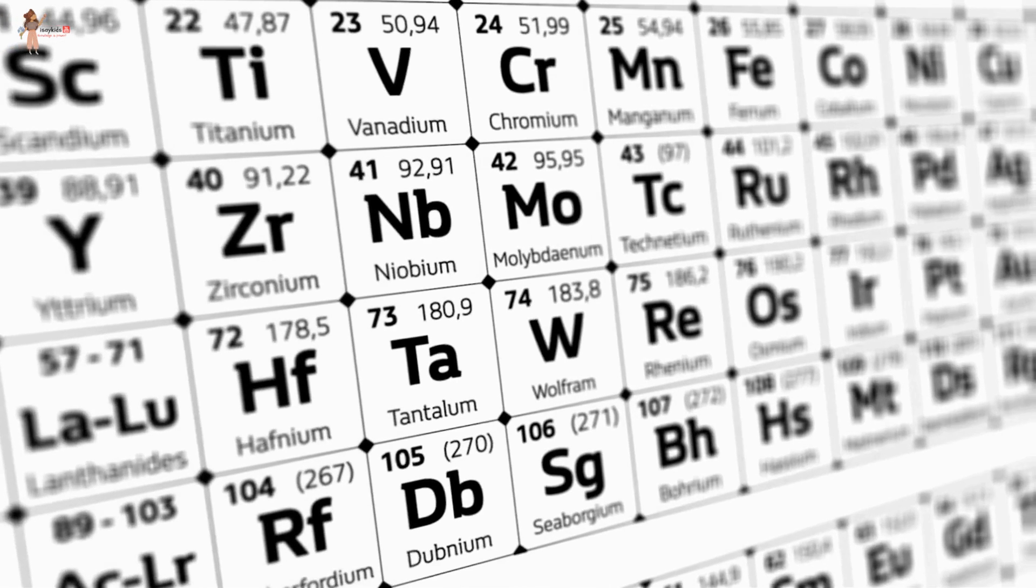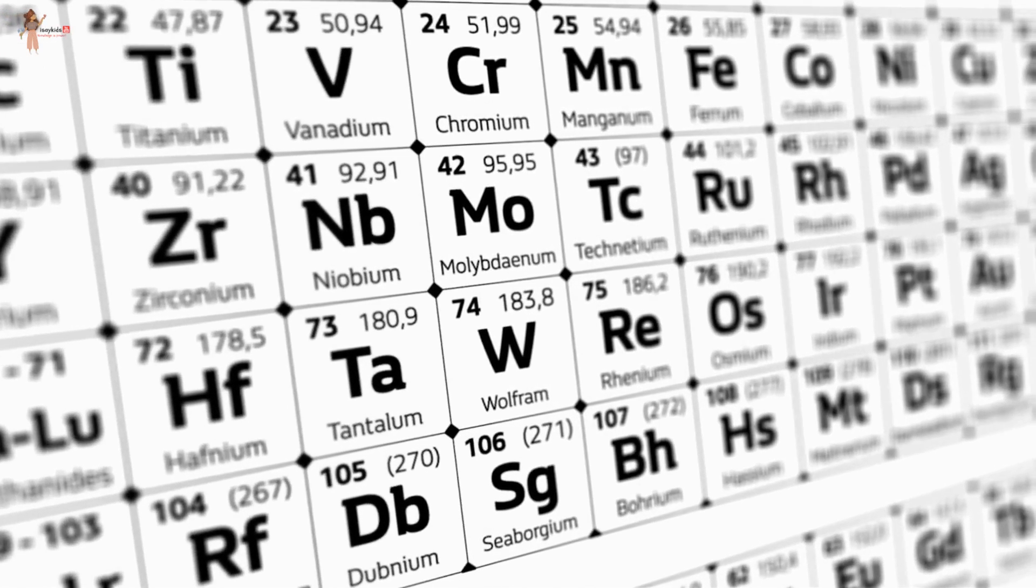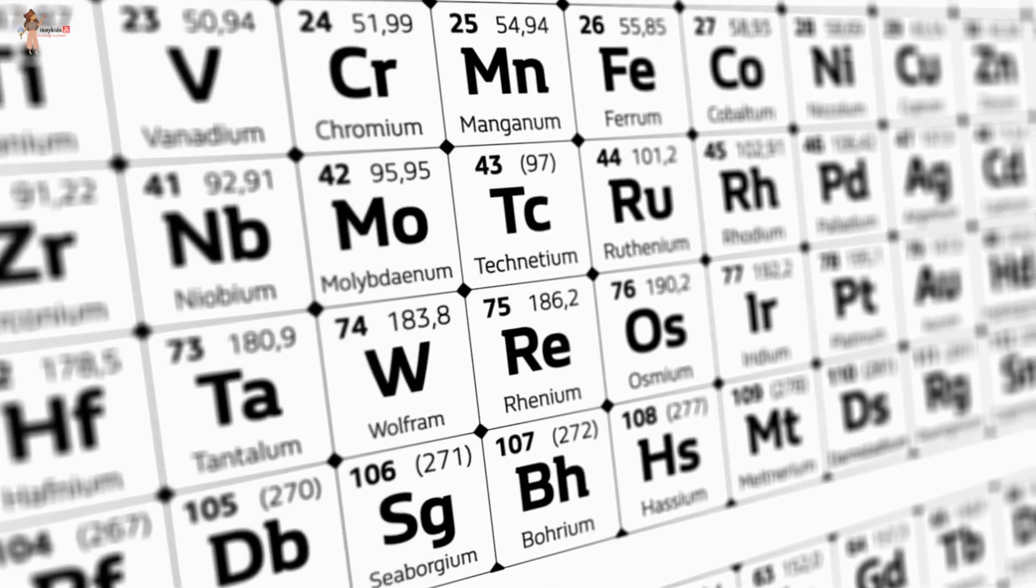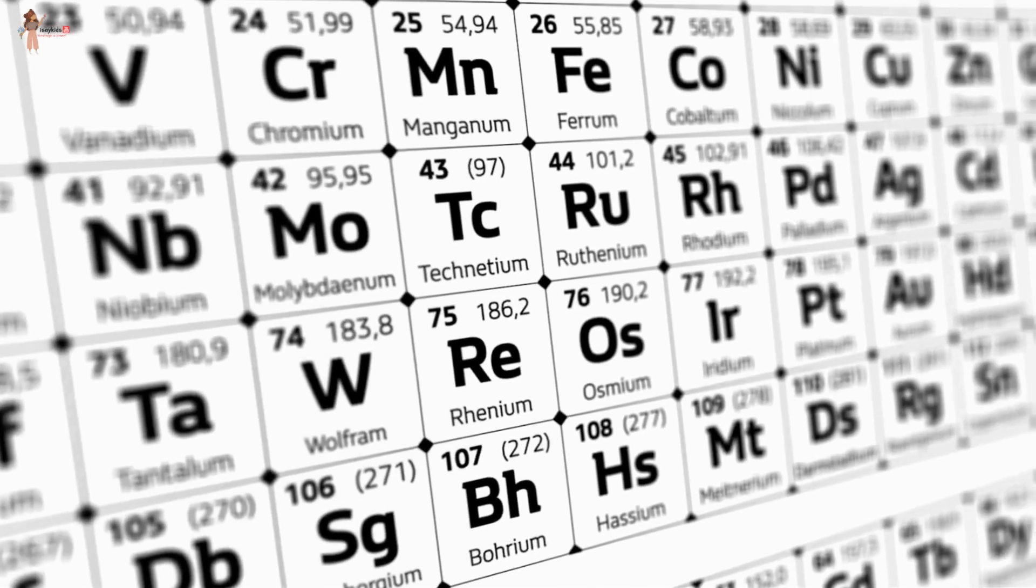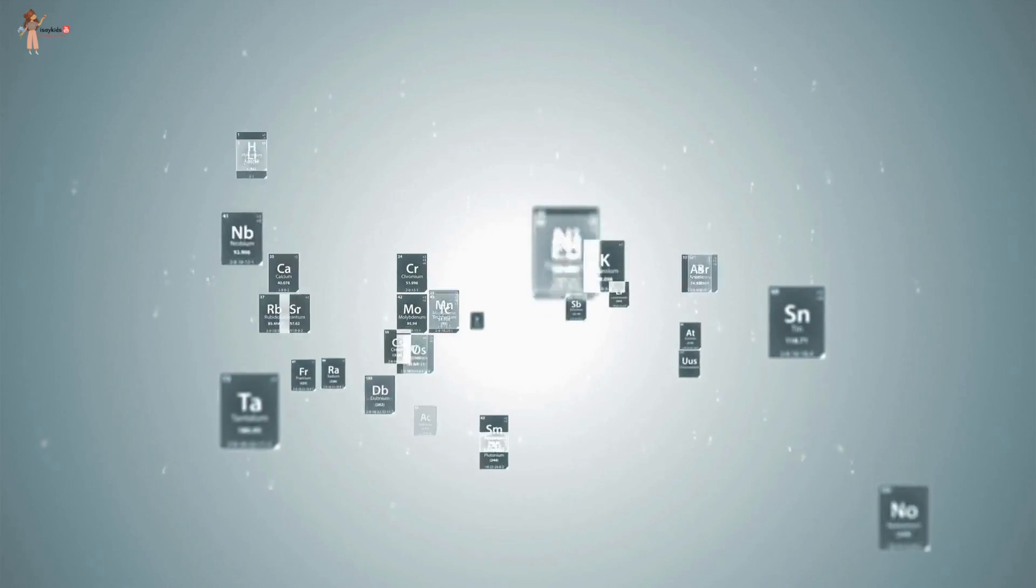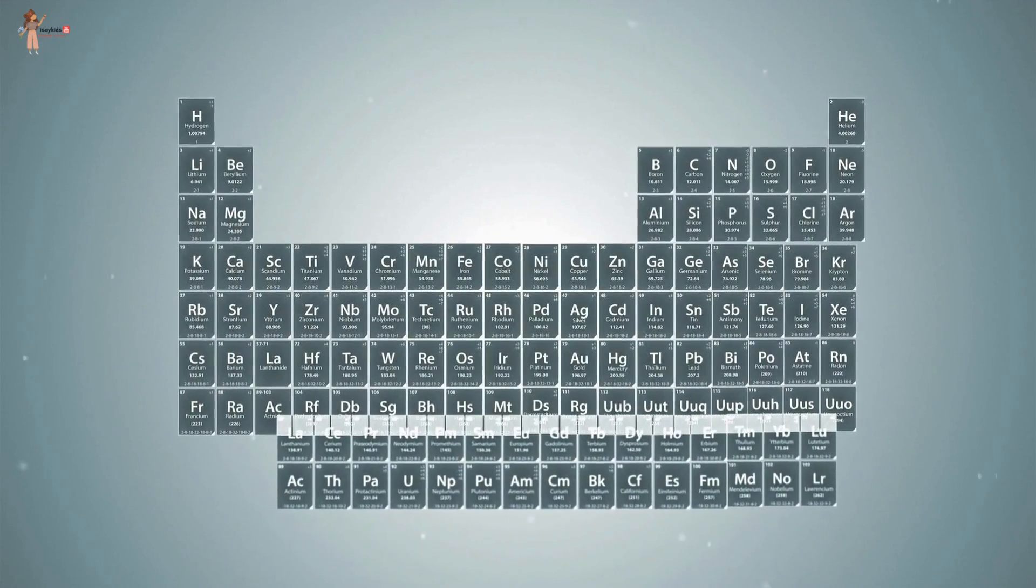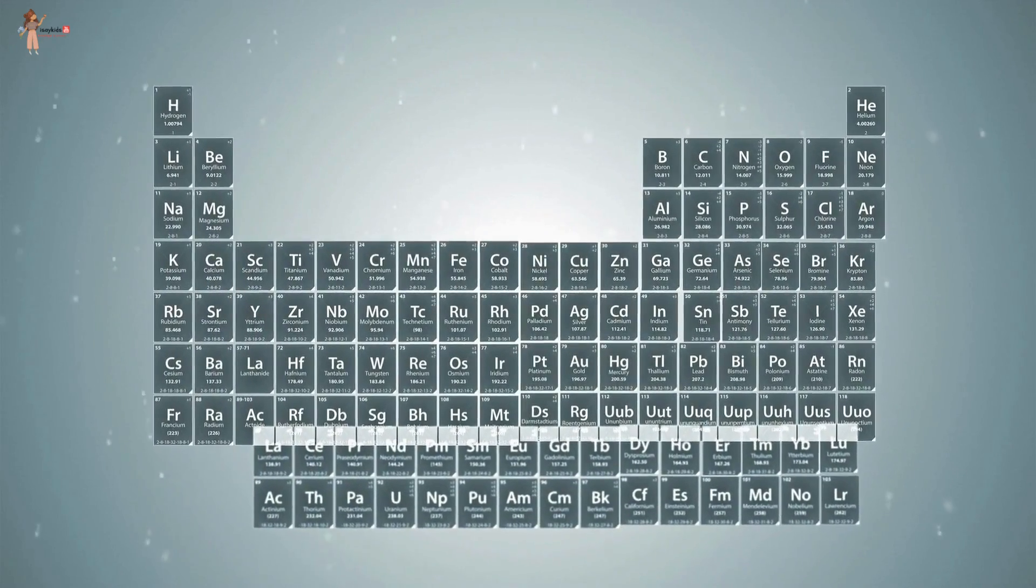Element symbols are abbreviations of the element's name. In some cases, the abbreviation comes from the element's Latin name. Each symbol is either one or two letters in length. Usually the symbol is an abbreviation of the element name.